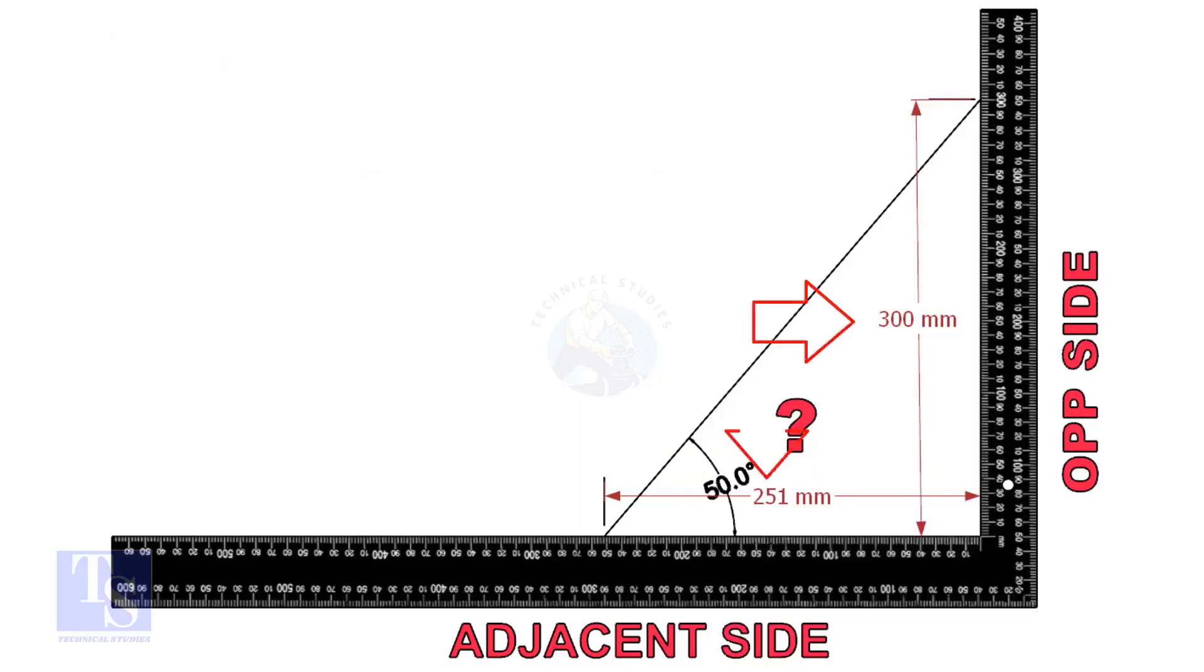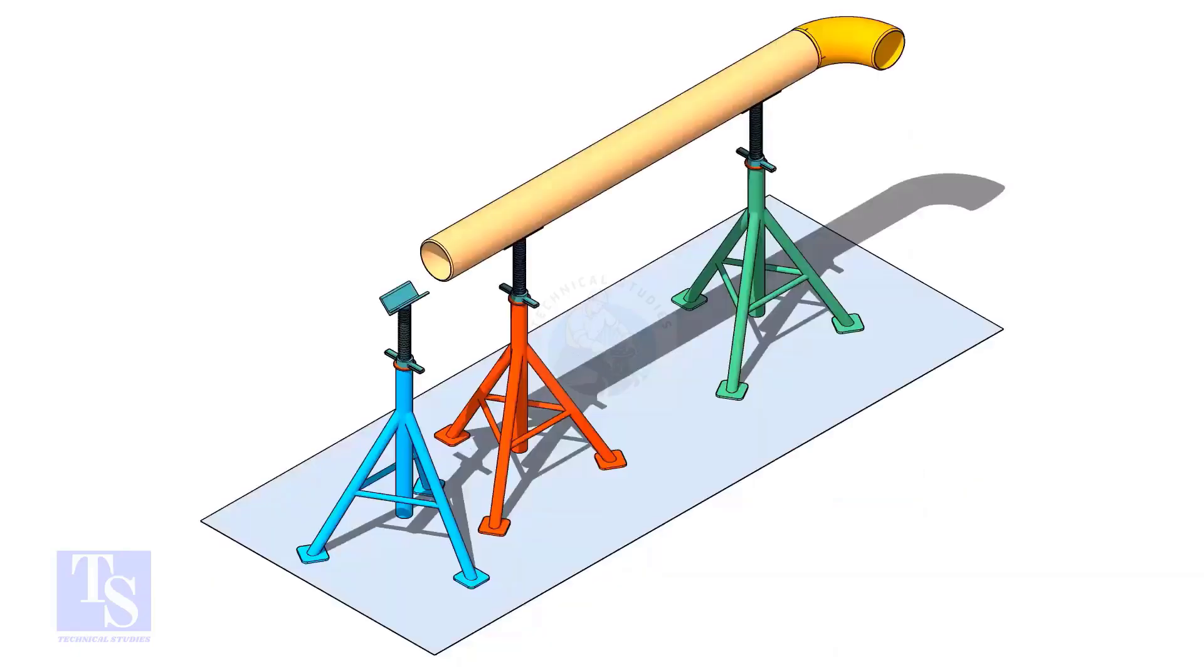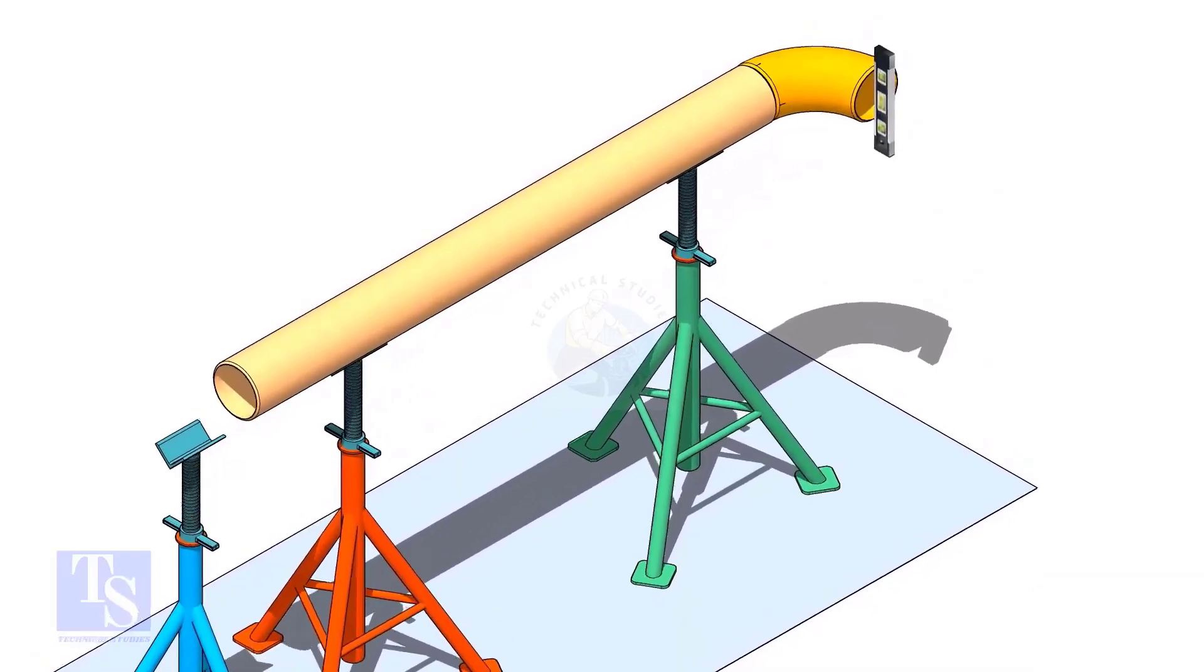Mark these dimensions on a large right angle as shown. Level the pipe and the elbow that is already fitted on the pipe.